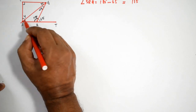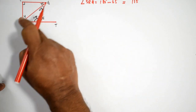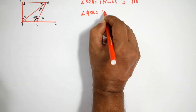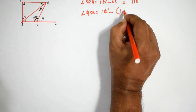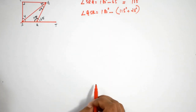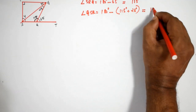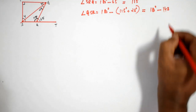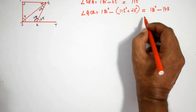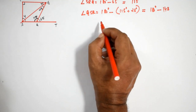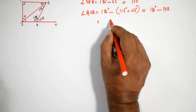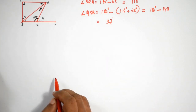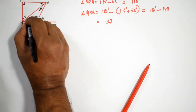Now, angle QSR: angle QSR equals 180 degrees minus 115 degrees plus 28 degrees, which equals 180 degrees minus 143 degrees, giving angle QSR equal to 37 degrees.